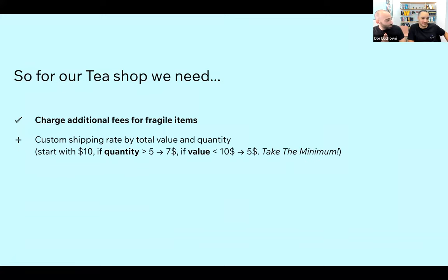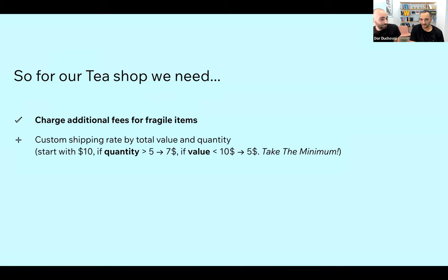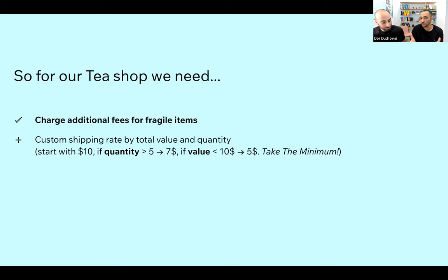Let's move to the second gap: we want to add a custom shipping option. The rate should be calculated according to quantity and total value. We want to start with a base price of $10. If the quantity is more than five items, we want to reduce it to $7 as an incentive for customers to buy more tea bags. And if the value of the cart is less than $10, we want to reduce it to $5 so we don't lose carts where we'd charge more than the teabag itself.